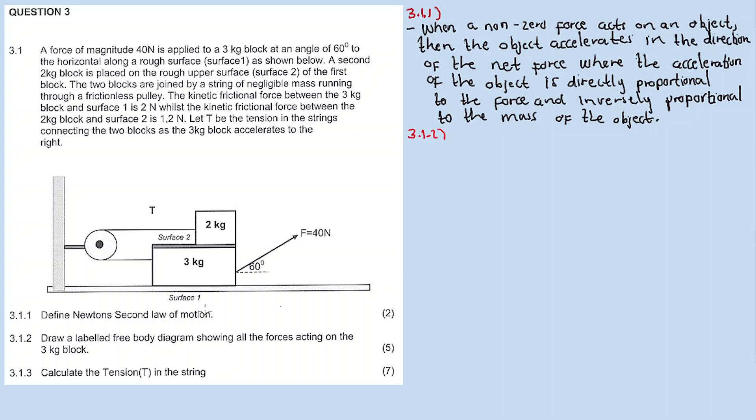Question 3.1.2 asks to draw a labeled free body diagram showing all the forces acting on the 3kg block. For the free body diagram, check the marks. If it's 5 marks, it means you're gonna have 5 vectors. If it's 3 marks, you're gonna have 3 vectors. If it's 2 marks, you're gonna have 2 vectors. But for this question, that's not the case.